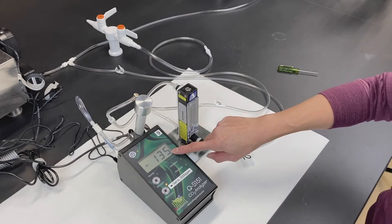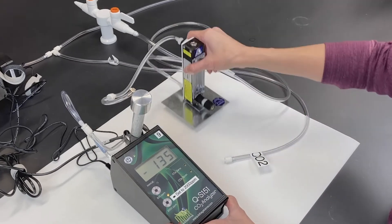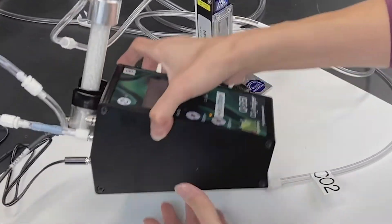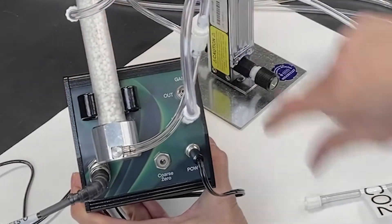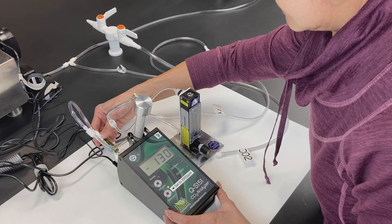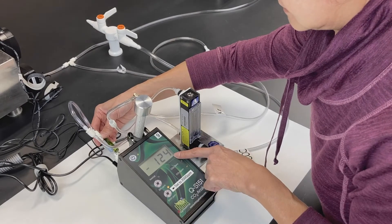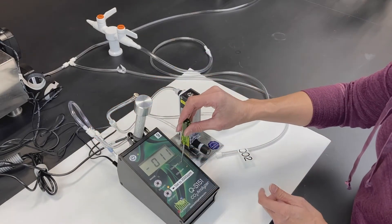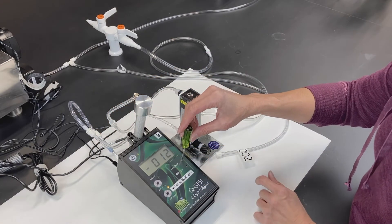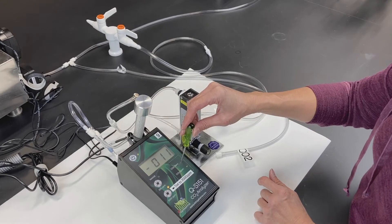If the zero reading on the carbon dioxide sensor is off by a lot, you should use the coarse adjustment screw at the back of the sensor. Use the coarse zero to get the reading closer to zero. Use the fine adjust on the front of the gas analyzer to set it the rest of the way to zero.